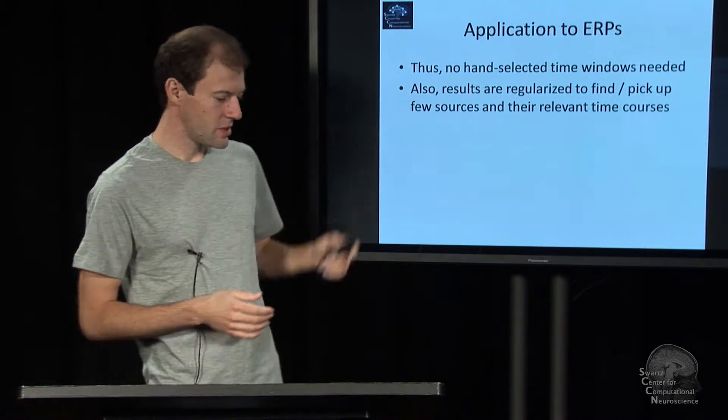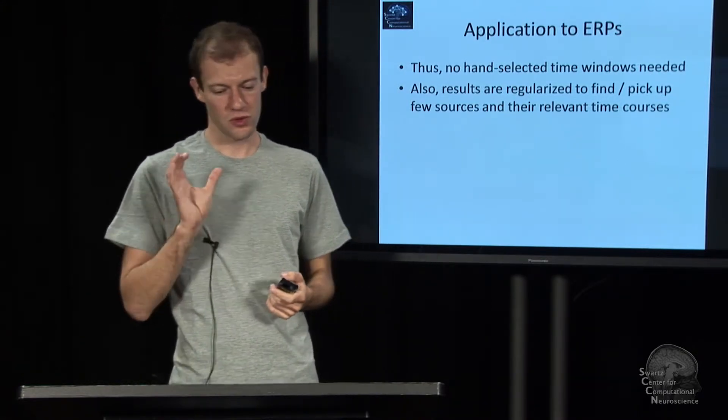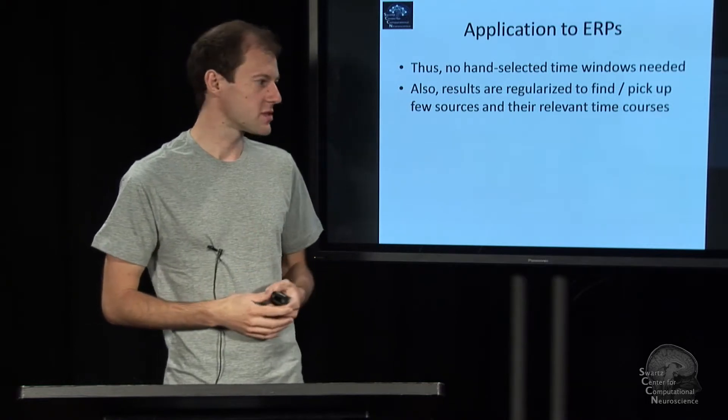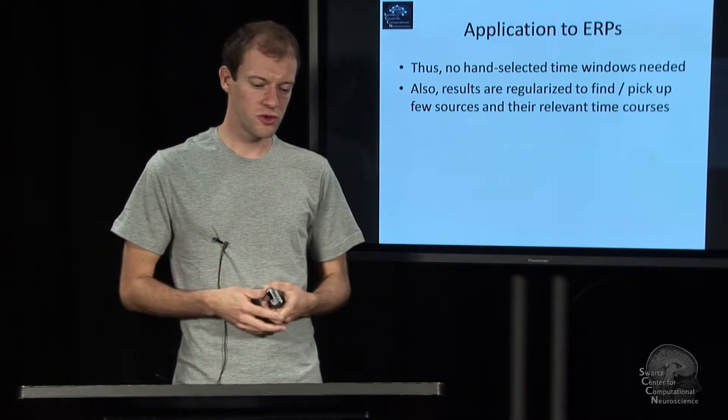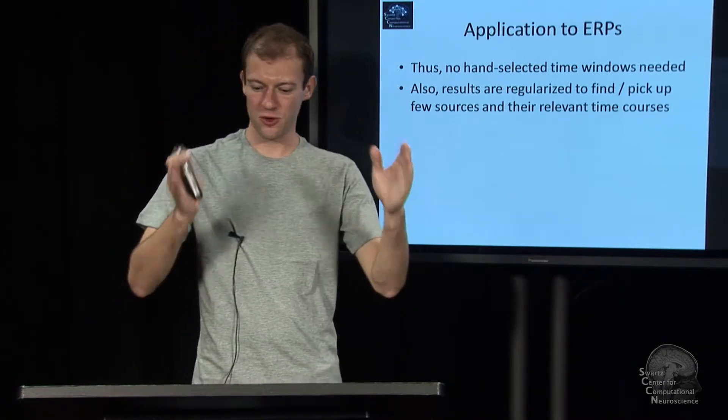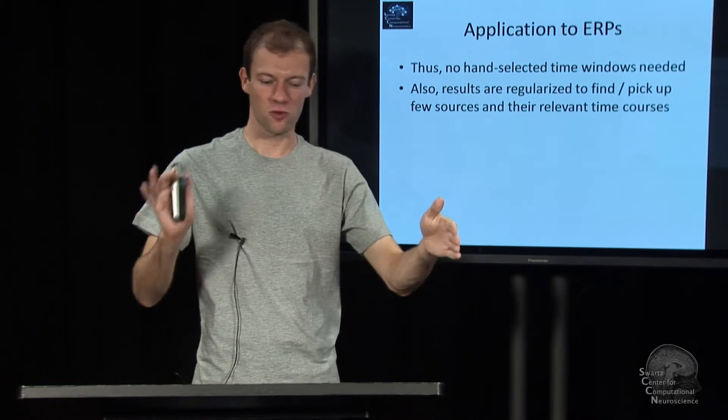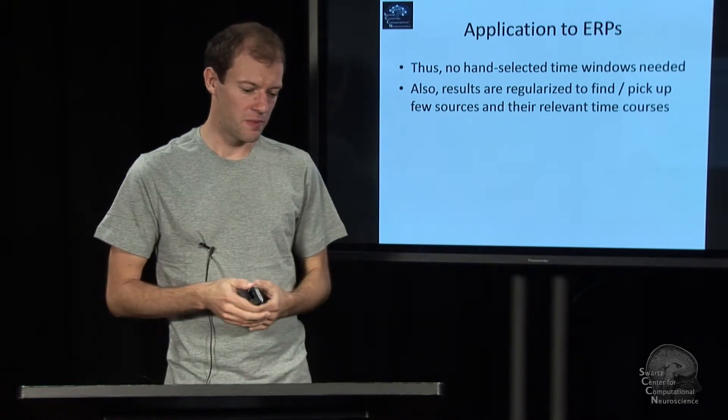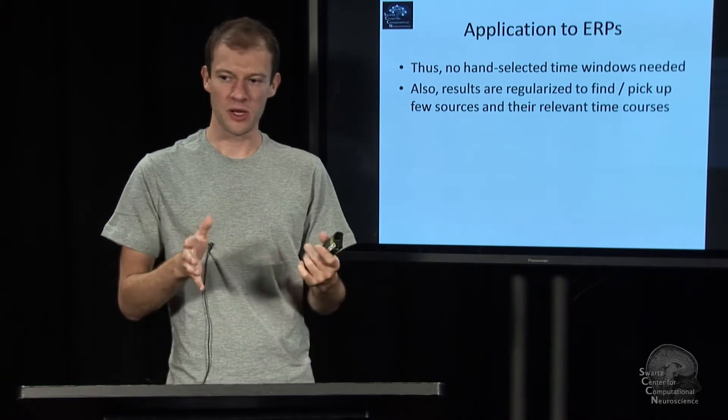And what's nice about that is, aside from the fact that it takes a while to optimize this, maybe 20 minutes or 30 for some reasonable sized data, there's no hand-tuned parameter in there. All you do is you say the overall segment that I think is interesting is something like minus one second to one second relative to an event, and it'll learn where it's relevant and what sources are relevant and how many sources.